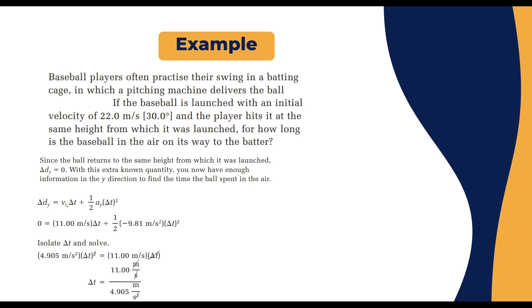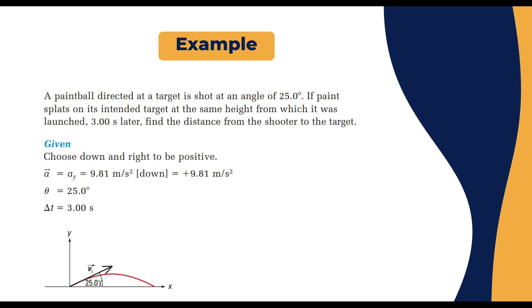We compensate each parameter with the known numbers: 0 = 11 × Δt + ½ × (−9.81) × Δt². Gravity acceleration is negative since upward is positive. Reorganizing gives Δt = 11 / 4.9 = 2.24 seconds. So the baseball stays in the air for 2.24 seconds from launch to landing.